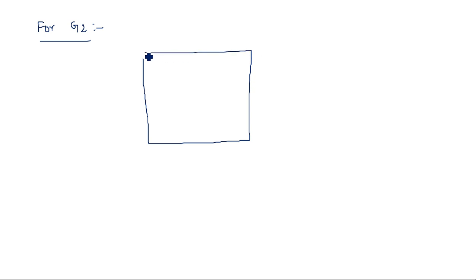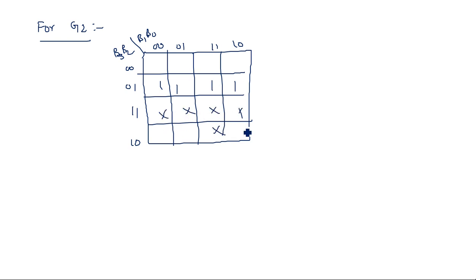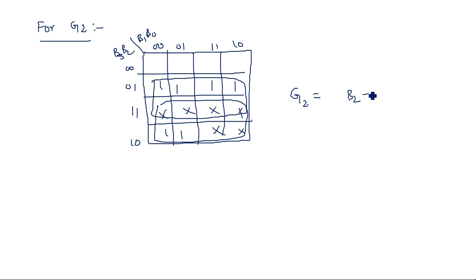The K-map for g2 is drawn with variables b3, b2, b1, b0. After placing the ones and don't cares, we map eight entries as one group and another eight as a second group. This gives single-variable terms, and the result is: g2 is equal to b2 OR b3.